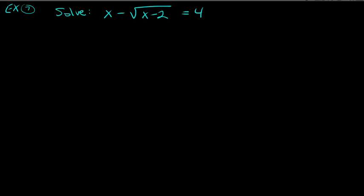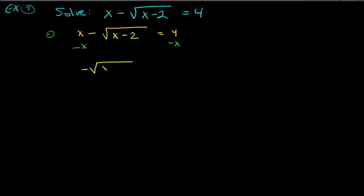Next problem: solve x minus the square root of (x minus 2) equals 4. This one is trickier because there's an x on the left outside the square root. Step one: isolate the square root — subtract x from both sides, giving negative square root of (x minus 2) equals 4 minus x.